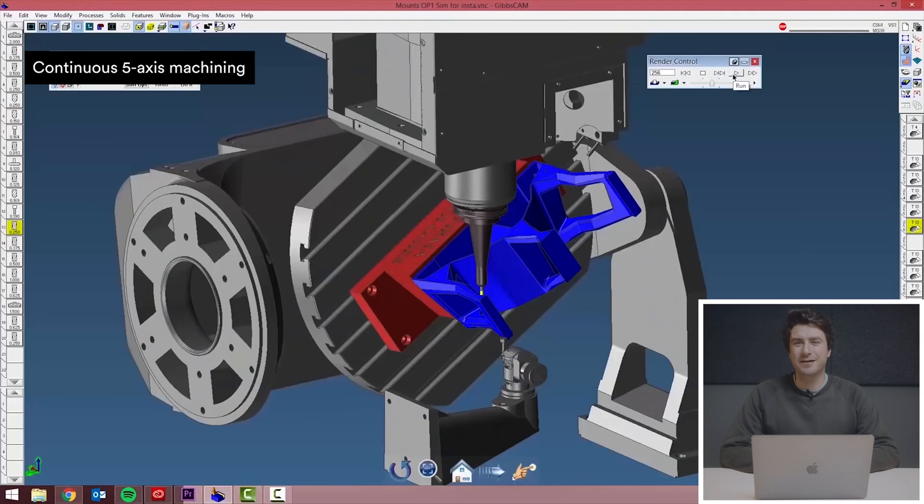In continuous 5-axis machining, the parts can be cut from 5 different axes. That's because the tool and the plate move together at the same time, allowing us to create more complex geometries and non-conventional shapes. You can see what that looks like right here.